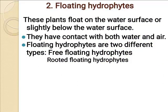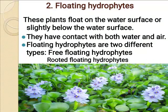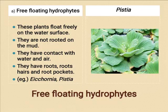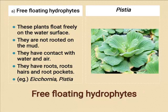The second main category is floating hydrophytes. These plants float on the water surface or slightly below it. They are further classified into free floating hydrophytes and rooted floating hydrophytes. Free floating hydrophytes float on the water surface, having contact with water and air but not rooted in soil. Well-known examples are Pistia and Lemna. Lemna has only one strand of root, and Wolfia is entirely rootless.